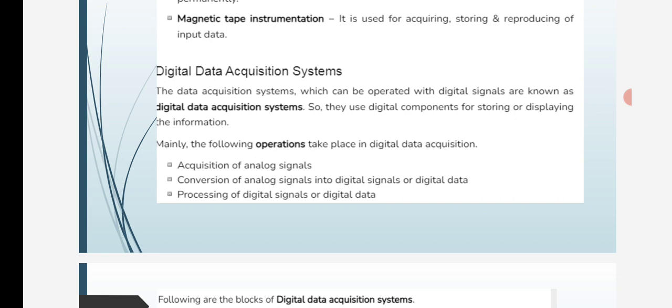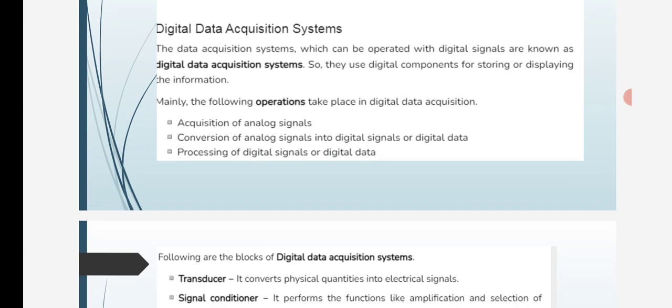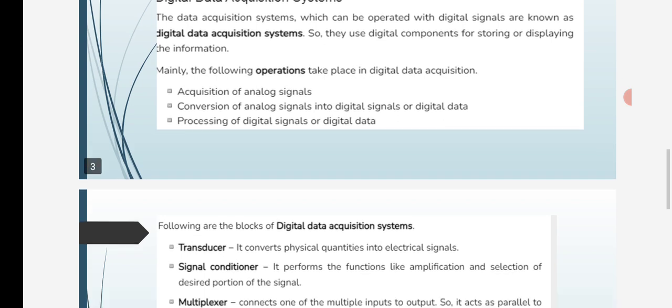The following operations take place in digital data acquisition: acquisition of analog signals, conversion of analog signals into digital signals or digital data, and processing of digital signals or digital data.